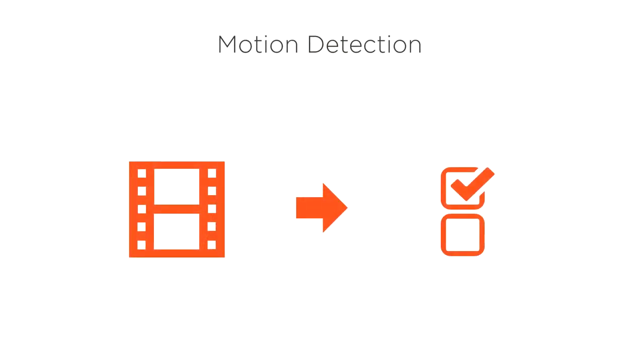First, we have motion detection. Motion detection allows us to identify movement in a video over time. Essentially, it answers the question, is anything moving in this video?